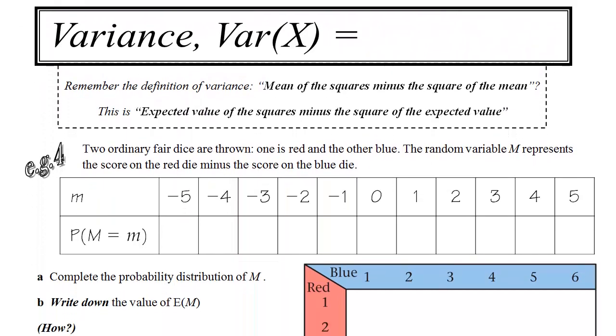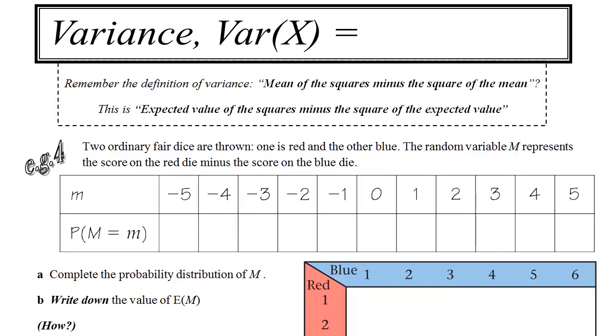Next, we're looking at a really important concept for discrete random variables, and that is the variance, or var x. You're familiar with variance from earlier in the course. You might remember one way that we had of memorizing the formula was to say that it is the mean of the squares minus the square of the mean. In this case, we have the expected value of the squares minus the square of the expected value. So what does that look like? The expected value of the squares, that's E of x squared. What mean value would we expect for x squared? Minus the square of the expected value. So that means the whole of E of x, the expected value, is squared. Once you memorize this, it's a fairly simple formula to use.